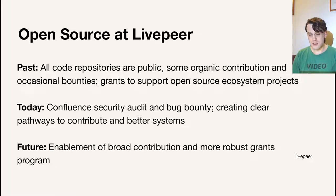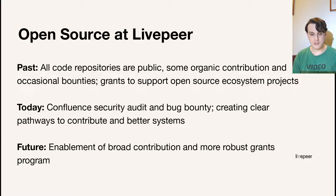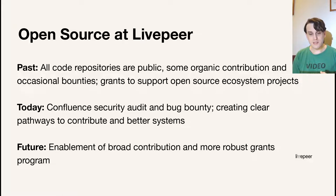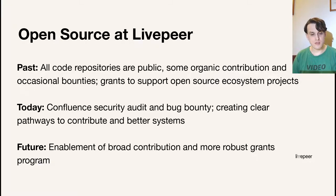Open source at Livepeer in the past, today, and the future has changed and is changing as things always do. In the past, all code was always public already, there was some iconic contribution but not very much, occasional bounties were written out, and there were some grants to support open source ecosystem projects — but it was a bit of a hodgepodge. Today we're doing things slightly better: Confluence is a big update to the Livepeer protocol getting a security audit and a bug bounty, and we're creating clear pathways to contribute. In the future, we want to write better contribution guidelines and provide a more robust grants program — including funding for both blockchain and non-blockchain related projects.